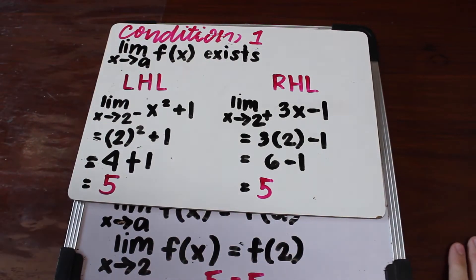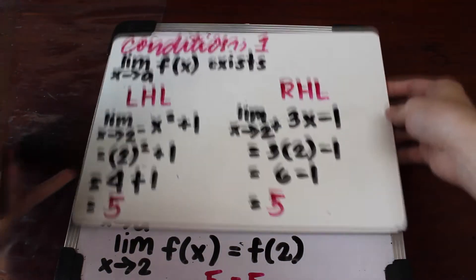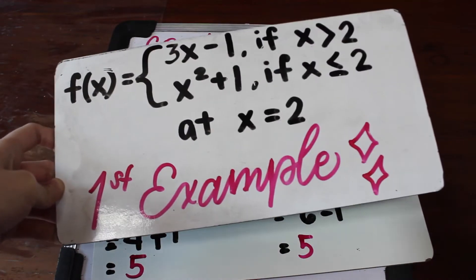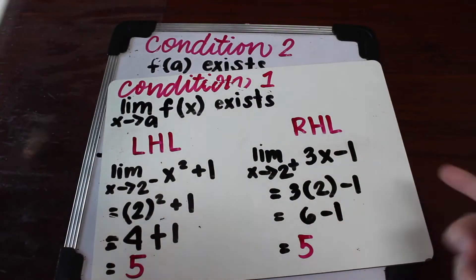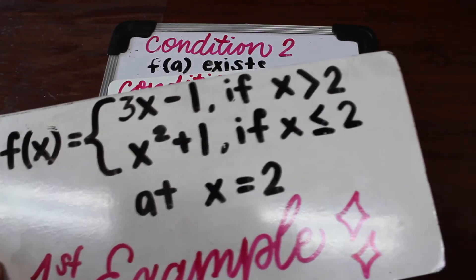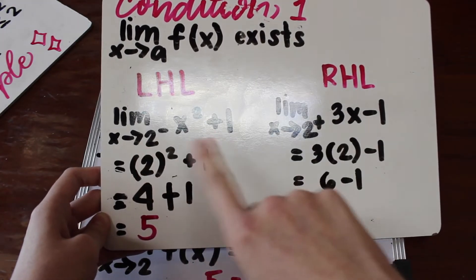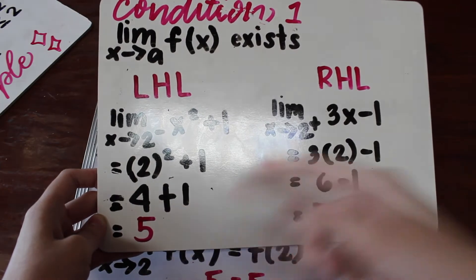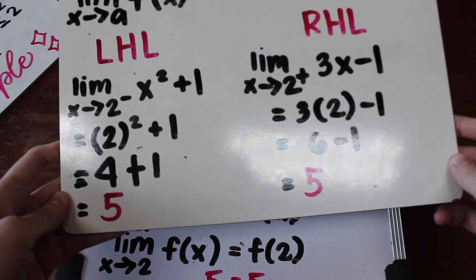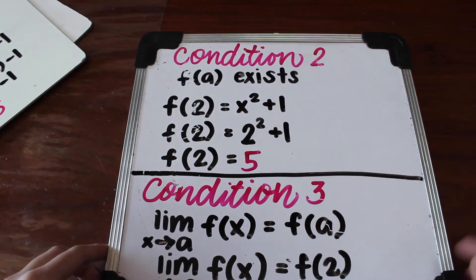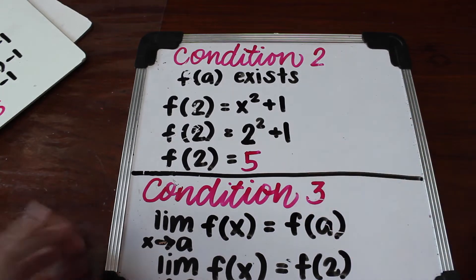Condition 1: in order for the limit of f of x to exist, the left-hand and the right-hand limit should both be equal. For the left-hand limit, I used x squared plus 1 because x is less than or equal to 2. For the right-hand limit, I used 3x minus 1 because x is greater than 2. Substituting x equals 2 into both gives 5 for each. Since both limits equal 5, the limit exists. For condition 2, plugging 2 into the function also gives 5, so f of a exists.